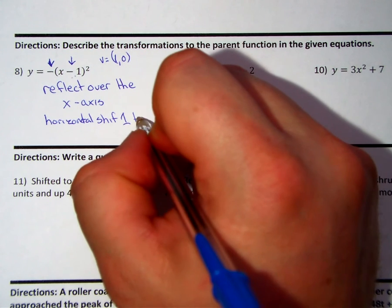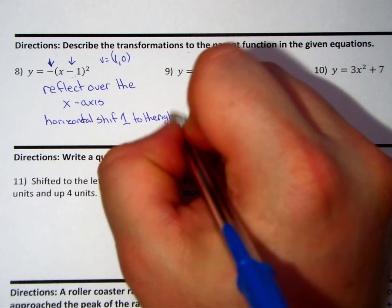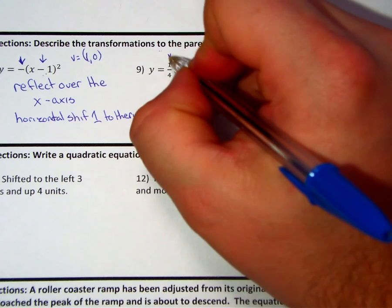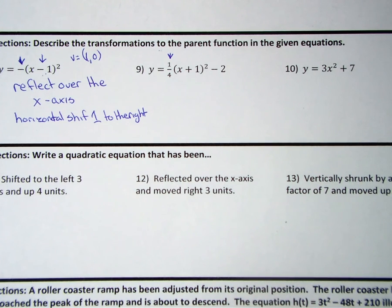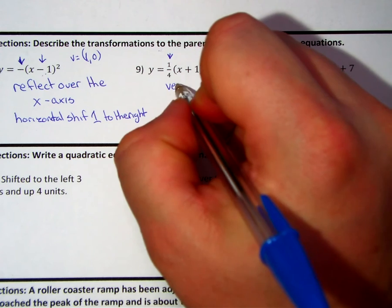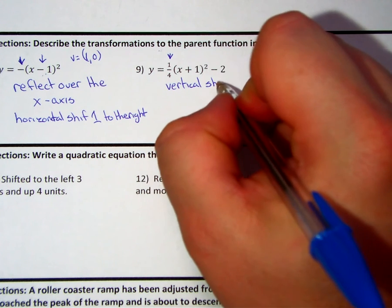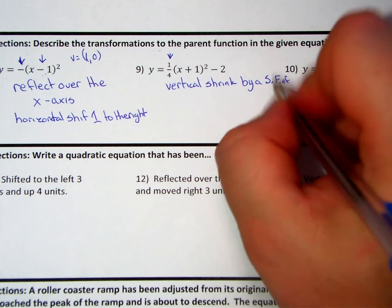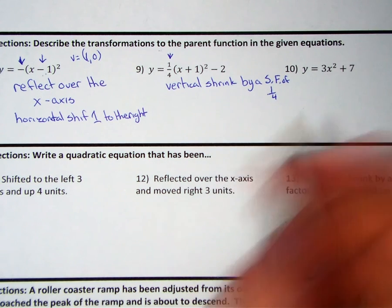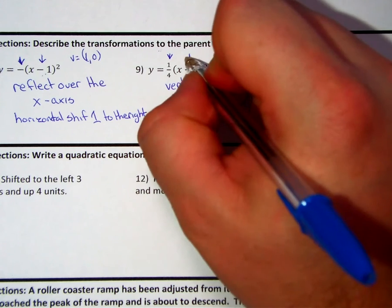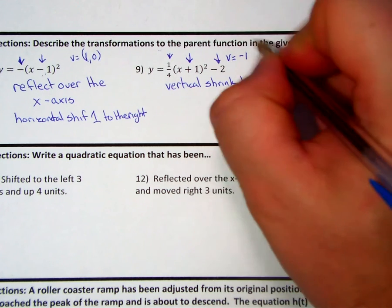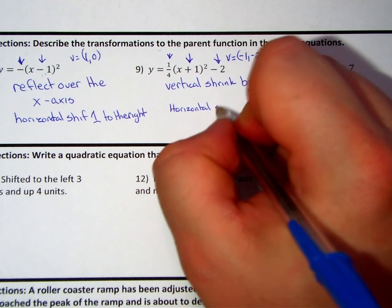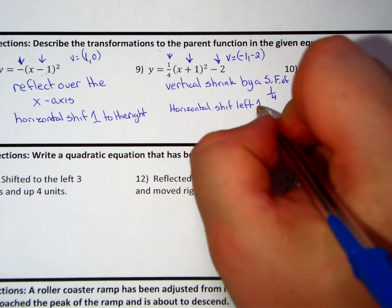Question number nine. I see that there's a one-fourth in front of my parentheses where a would be, and so that's actually going to result in a vertical shrink by a scale factor of one-fourth. Next, it's helpful to know my vertex. My vertex is at the opposite of the inside, so negative one, keep the outside negative two. So we have a horizontal shift left one.